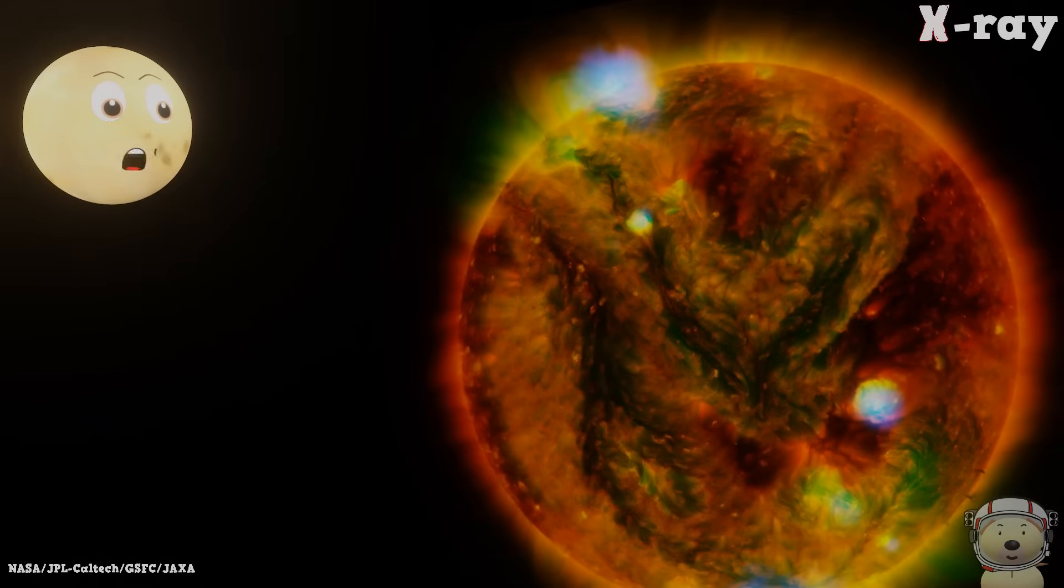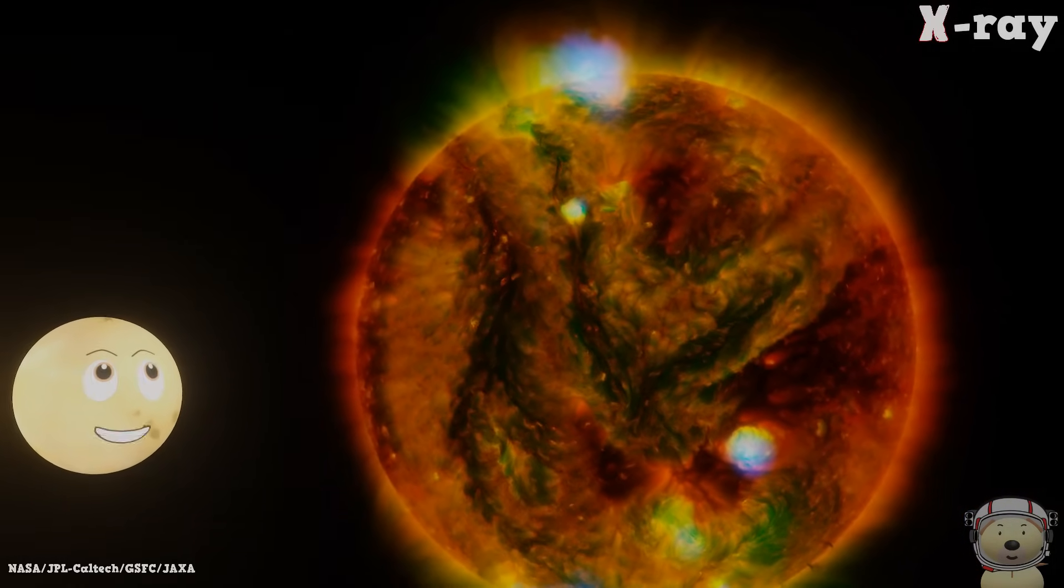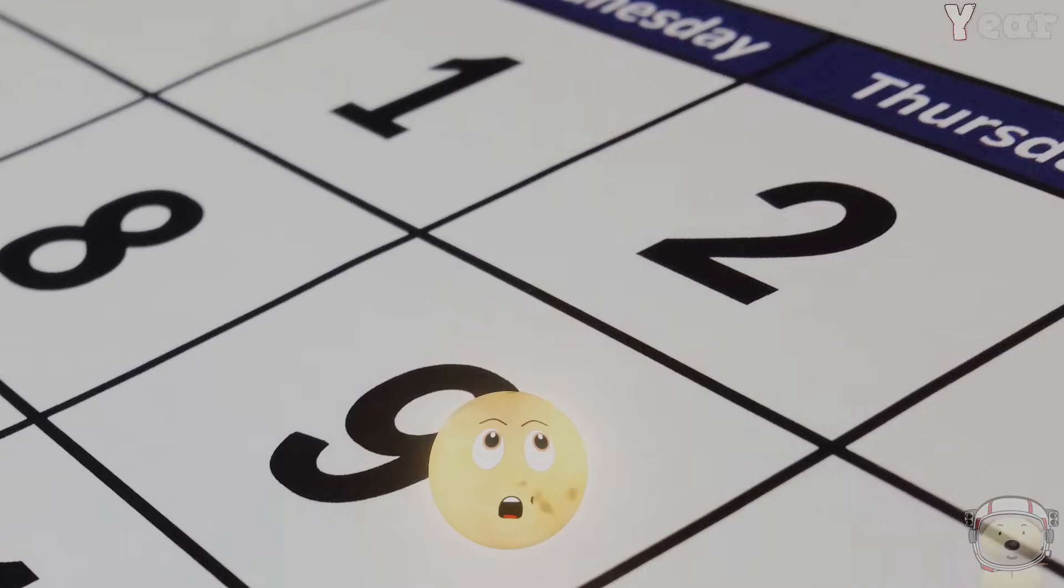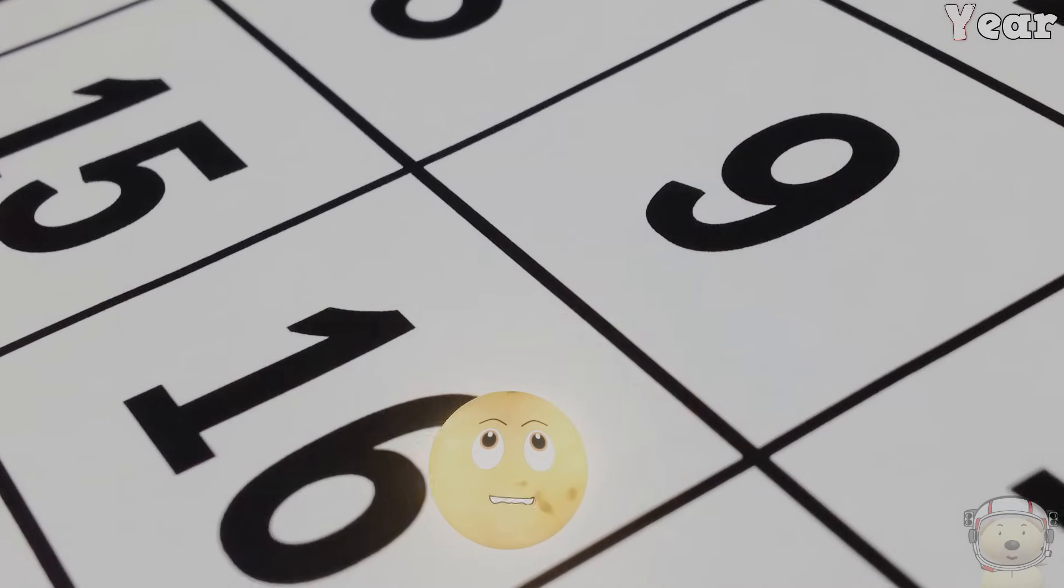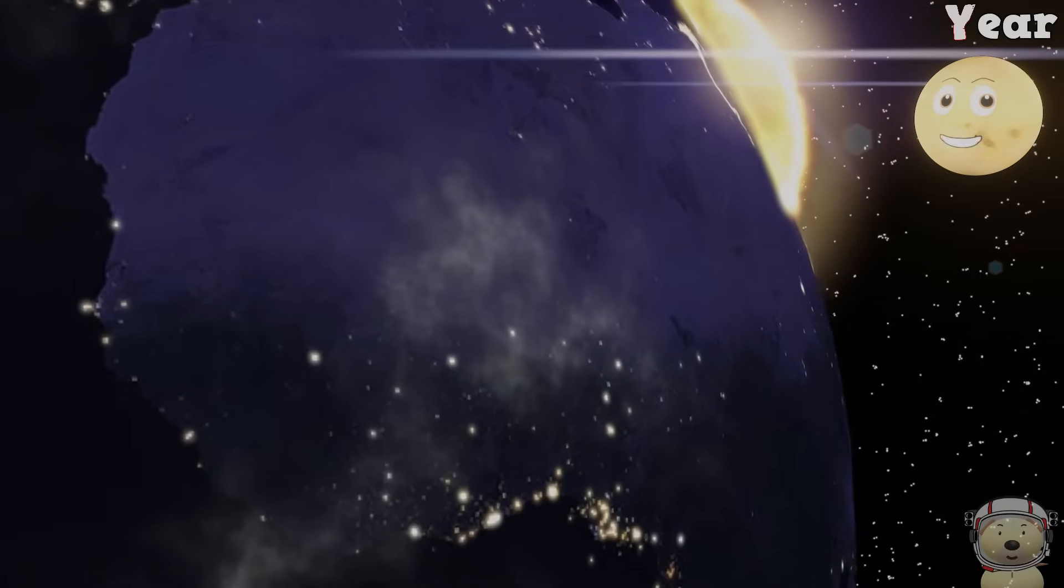X is for X-rays, high energy light, shooting from the sun, what a wondrous sight. Y is for year, 365 days, Earth orbits the sun, so can its rays.